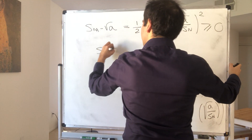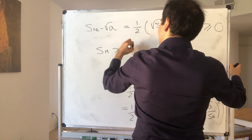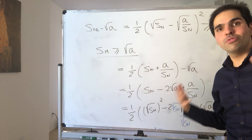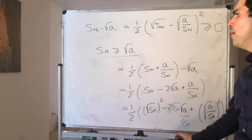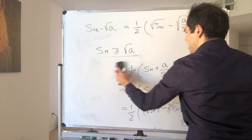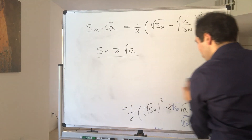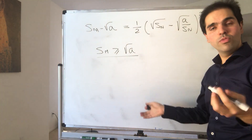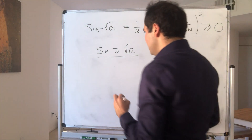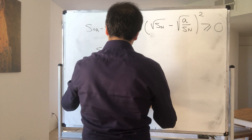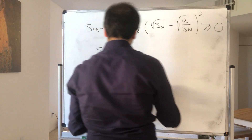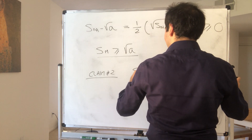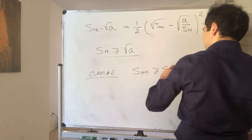So s_m minus the square root of a is non-negative, meaning s_m is greater than or equal to the square root of a for all m ≥ 1. Combining with the first case, for all positive integers n, s_n is bounded below by the square root of a. Next, we want to show the sequence is non-increasing.